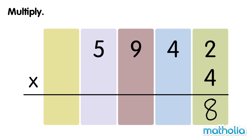multiply the 10s. 4 times 4 tens equals 16 tens. Regroup 16 tens into 1 hundred and 6 tens.